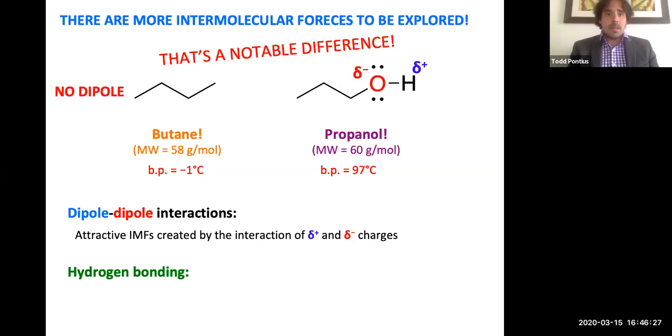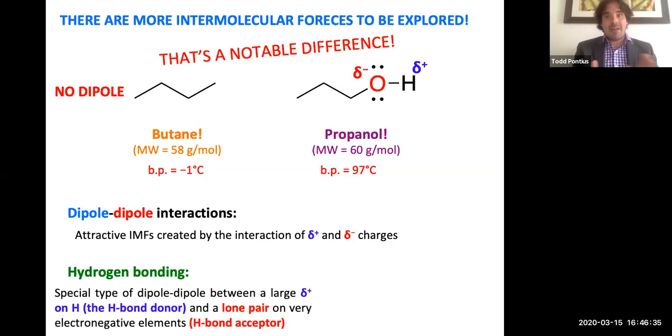So when compared to butane, which has no dipole, propanol with its dipole is going to have considerably more intermolecular forces by virtue of having that. In fact, propanol also has another type of intermolecular force known as hydrogen bonding. It's a special type, a more pronounced dipole that we get when we have a hydrogen that's bonded to either an oxygen, a nitrogen, or a fluorine. And we'll explore that one in more depth in just a few slides.